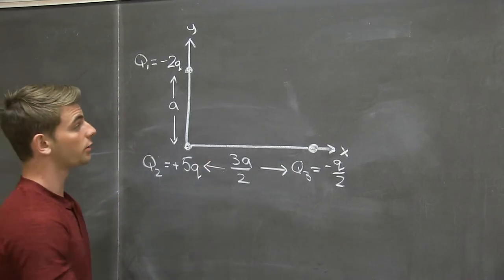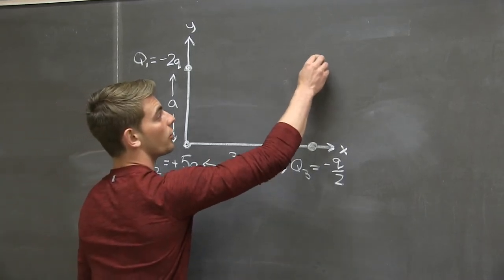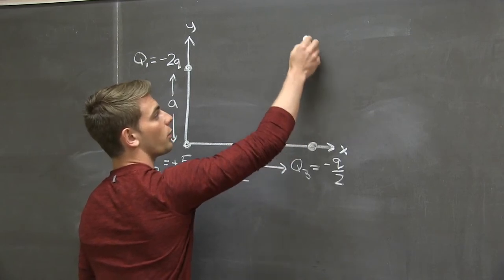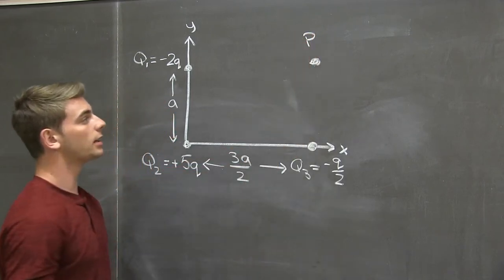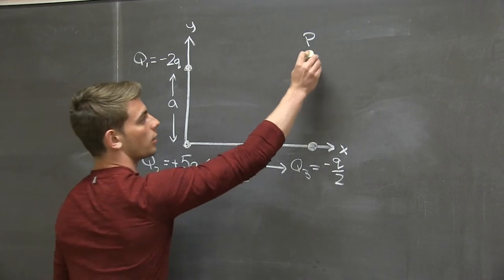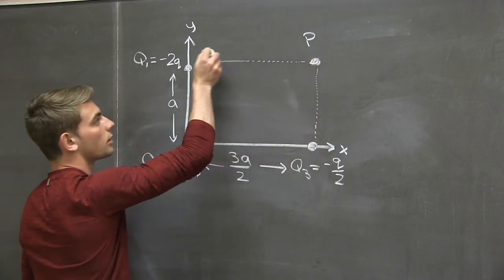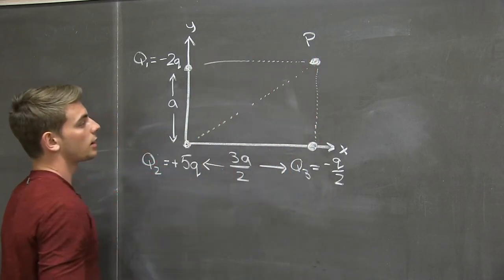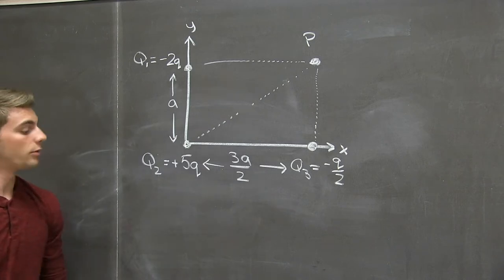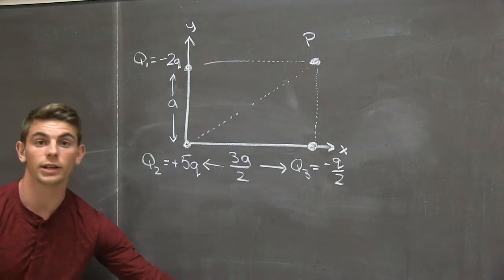Now with these three charges in mind, we need to find the electric field at this point, I'll call p, the fourth corner of that rectangle.